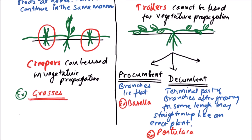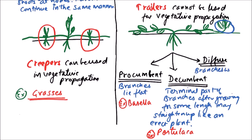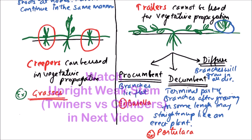We mean to say that the branches will grow like this and then they will become straightened up. So the terminals will be straightened up and that will be termed as decumbent. And the third type is diffuse. Diffuse means the branches will grow in all directions. Example includes Boerhavia.